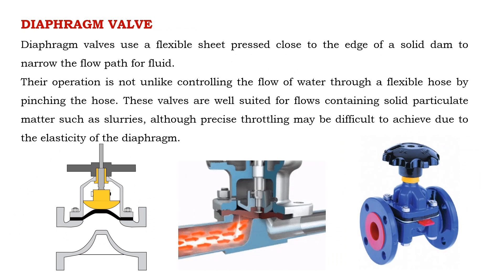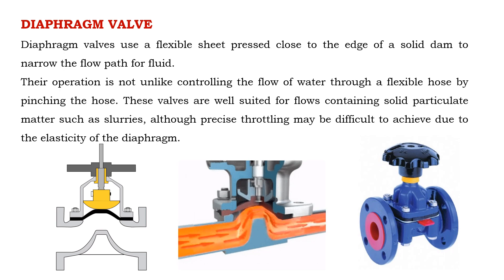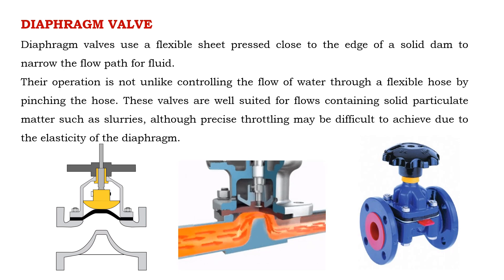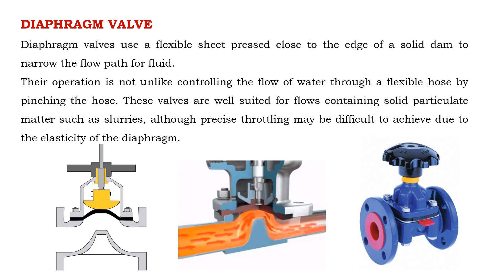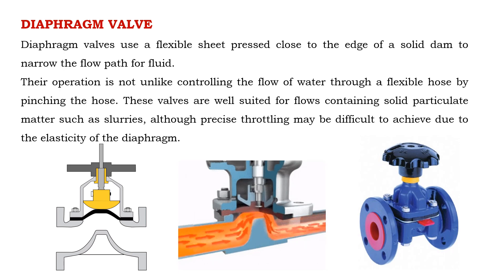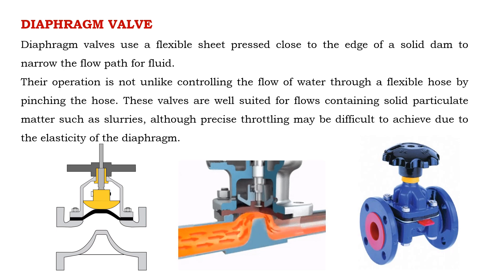Diaphragm valves use a flexible sheet pressed close to the edge of a solid dam to narrow the flow path for fluid. Their operation is not unlike controlling the flow of water through a flexible hose by pinching the hose. These valves are well suited for flows containing solid particulate matter such as slurries, although precise throttling may be difficult to achieve due to the elasticity of the diaphragm.